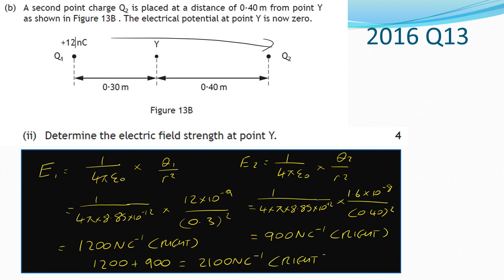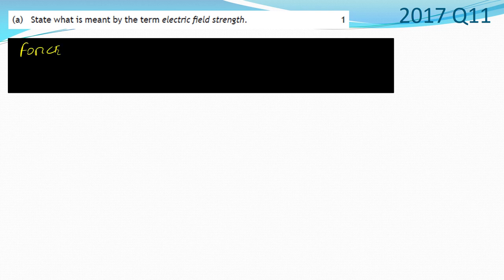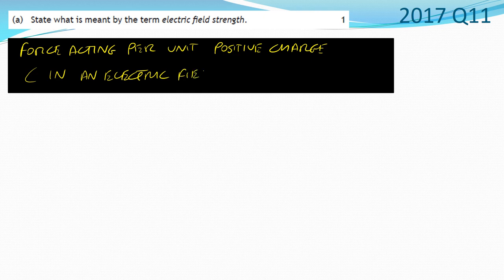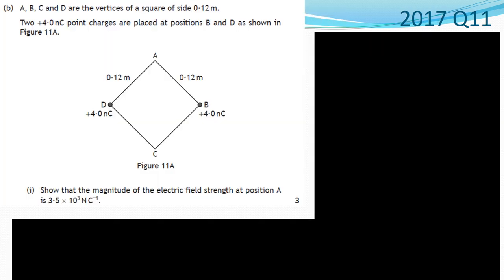Remember, electric field strength is a vector, so we should state the direction. 2017 paper, question 11: state what is meant by the term electric field strength. The electric field strength is the force acting per unit positive charge in an electric field.